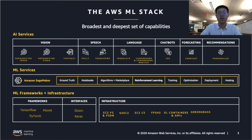The next layer down is a platform service. This is where Amazon SageMaker falls. The goal of the platform is to allow customers to develop their own customized machine learning solutions and provide them with the tools that they need to do that effectively.